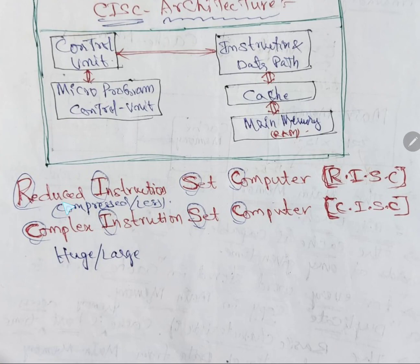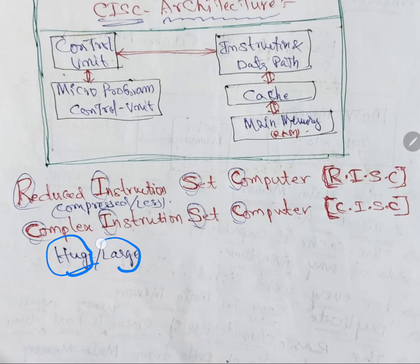RISC stands for Reduced Instruction Set Computer. In olden days, we used Reduced Instruction Set Computers, meaning fewer instructions were used just for the calculation part — the computer was used like a calculator. Nowadays we are using Complex Instruction Set Computer, which has a large amount of instructions to manipulate and design more software.